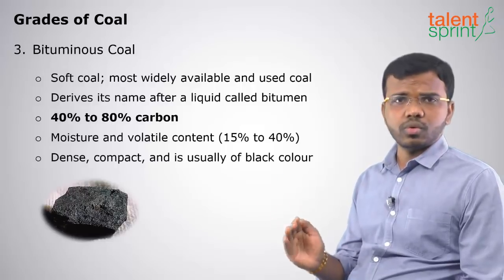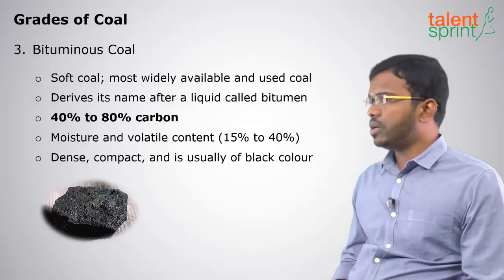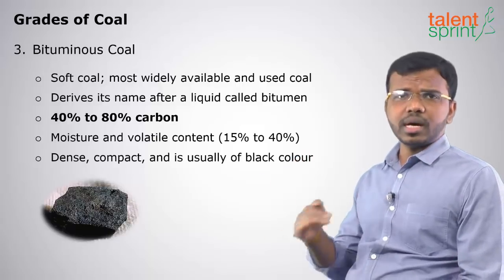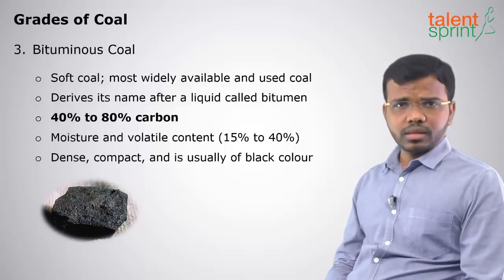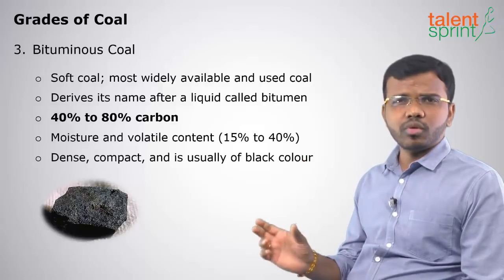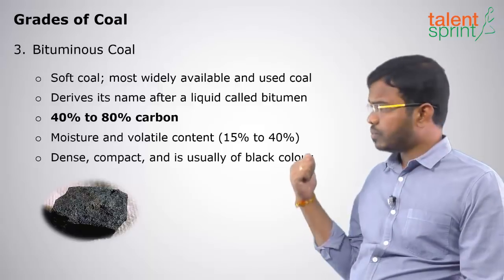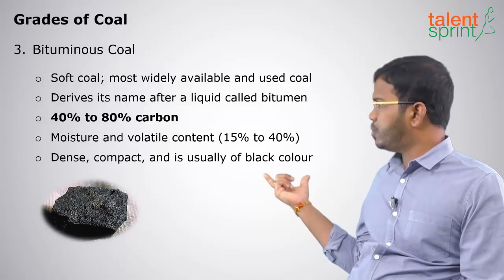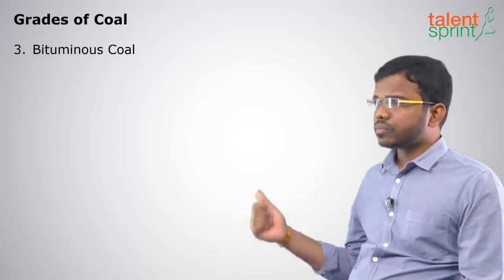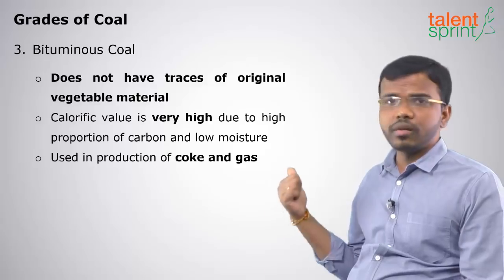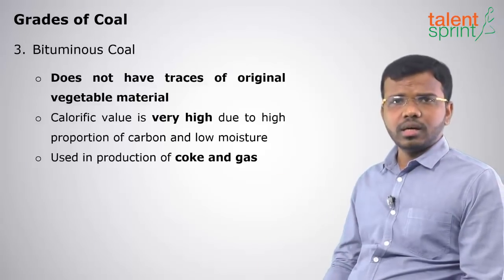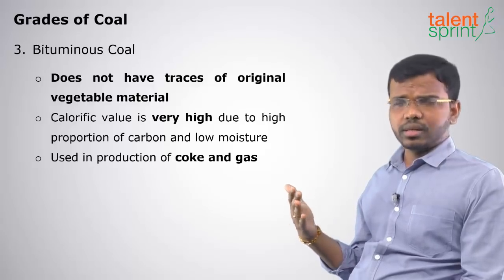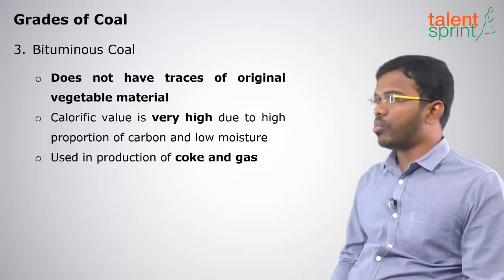The third grade of coal is bituminous coal. It is a soft coal and the most widely available and used coal. It derives its name from a liquid called bitumen. It has 40 to 80 percent carbon content and moisture and volatile content of 15 to 40 percent — less than lignite and peat. It is dense, compact, and usually black in color. It is used in laying of roads, and its calorific value is high due to high carbon content and low moisture. It is also used in production of coke and gas.